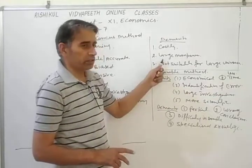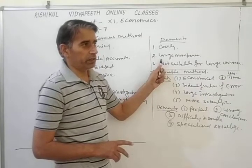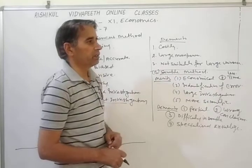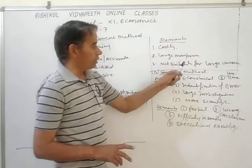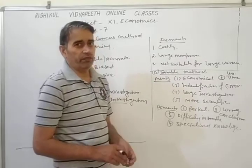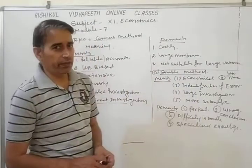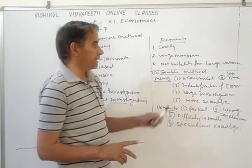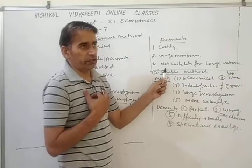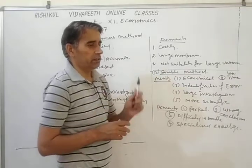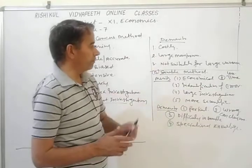Next demerit is large manpower. Under this method, when the area of investigation is wide, we require more personnel to collect information from different areas, so it requires more manpower. Next is not suitable for large universe. When the universe or population size is very big, counting each and every item becomes very complicated and difficult. In those cases, this method is not suitable.